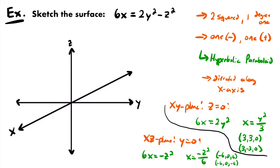Now let's plot these points in our 3D coordinate system and draw our parabolas to finish the sketch of this hyperbolic paraboloid. Starting with the points in the xy-plane — (3, 3, 0) and (3, -3, 0). Label x = 3 and x = -3, and y = 3 and y = -3 on the axes. To plot the point (3, 3, 0), draw a line parallel to the x-axis from y = 3, and a line parallel to the y-axis from x = 3 — where those lines intersect is our point.